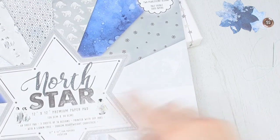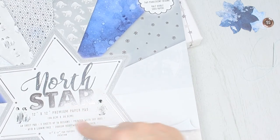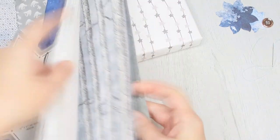For the second idea I'm using the first edition North Star paper pad from Craft Label. I'll link it in the description below.